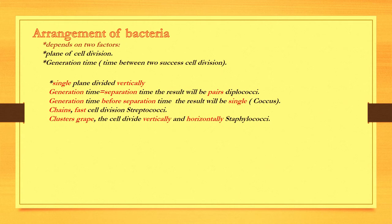If the generation agent came before the separation, we would have two cells separated from the other and they would be single. The bacteria that form the nest form a chain in which the division factor is very fast.